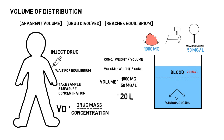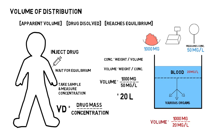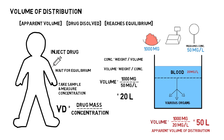Compare that to the previous case where it was 50 mg per liter. Now when I calculate the volume of distribution, it equals 1000 milligrams divided by 20 milligrams per liter, which gives me 50 liters. Now 50 liters is apparently a huge volume compared to the 20 liters which is actually the amount of fluids in the container. This is known as apparent volume of distribution.